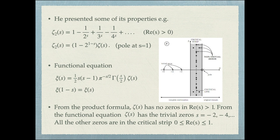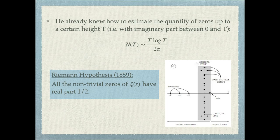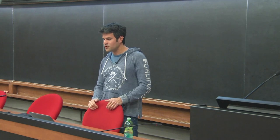From the product formula, the Riemann zeta function has no zeros to the right of one. From the functional equation, it will have trivial zeros at the negative even integers — these come to kill the poles introduced by the gamma function. All other zeros of the Riemann zeta function must have real part between zero and one, and here's where the question lies. Riemann already knew how to compute the amount of zeros: if you go up to height t along the imaginary axis, you have roughly t log t over 2 pi zeros. The Riemann hypothesis he proposed in this paper is that all of these zeros are aligned on the so-called critical line — all non-trivial zeros have real part equal to one half.